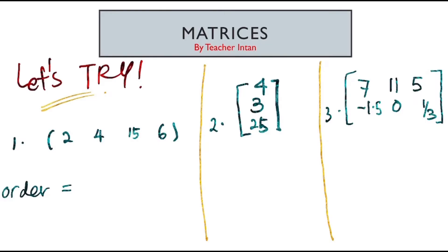So, let's try to determine the order of the matrices. You can pause and play to get the correct answer. Number 1. I have matrix 2, 4, 15, 6. So, determine the rows and columns for this matrix first to know the order. So, I have row 1, 1 row only. Column 1, 2, 3 and 4, 4 columns. So, the order is rows times column 1 times 4.